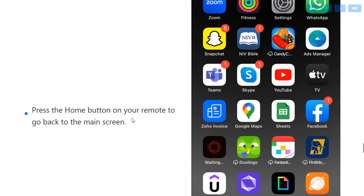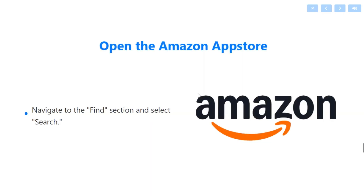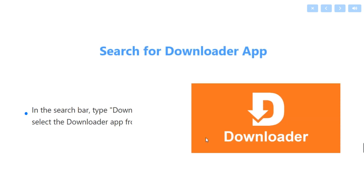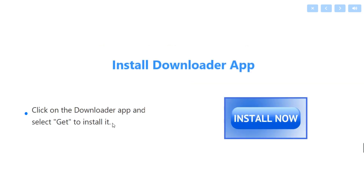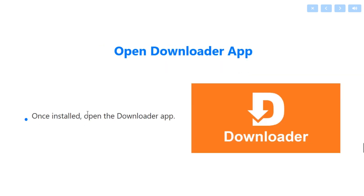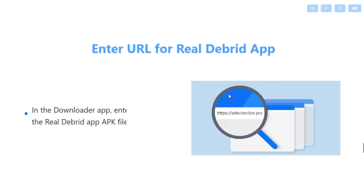Open the Amazon App Store, navigate to the Find section, and select Search. In the search bar, type Downloader and select the Downloader app from the list. Click on it to install.